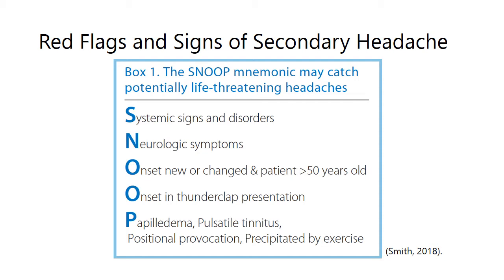In patients with previous long-term headache disorders, if this is a different type of headache or there are changes, that's going to be significant. It's really important to question the patient as to whether or not this headache feels different to the headache they've had previously. Moving on to the next O: onset in thunderclap presentation, referring specifically to a rapid onset of headache that comes on extremely rapidly. We'll talk more about this when we get to subarachnoid hemorrhage.